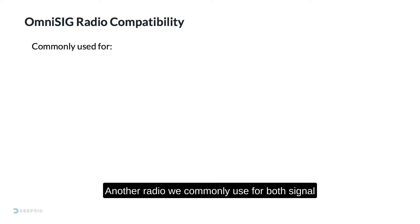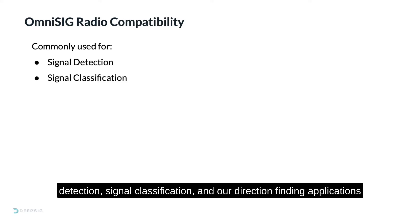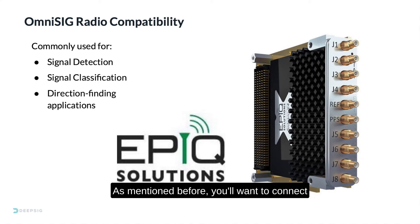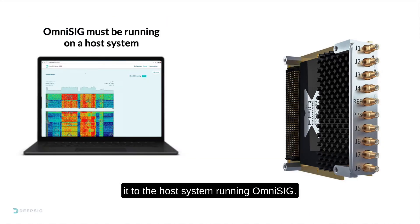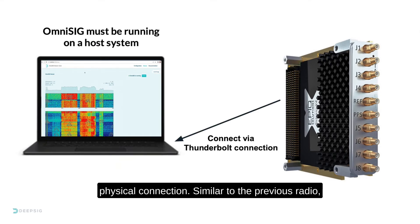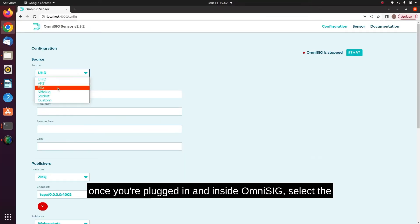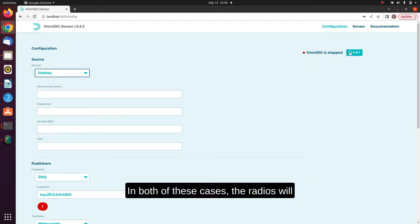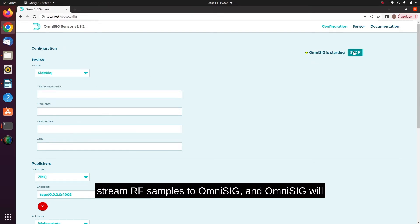Another radio we commonly use for both signal detection, signal classification, and our direction-finding applications is the EPIC Sidekick X4. As mentioned before, you'll want to connect it to the host system running OmniSig, in this case via a Thunderbolt physical connection. Similar to the previous radio, once you're plugged in and inside OmniSig, select the EPIC Sidekick option and you'll be off and running. In both of these cases, the radios will stream RF samples to OmniSig, and OmniSig will classify signals as they appear on the screen.